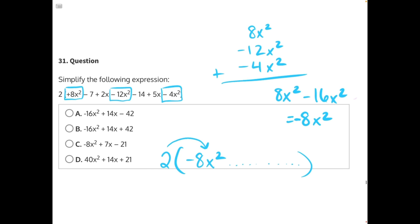the final result of this first term in our polynomial would be negative 16x squared. 2 times 8x squared, negative.